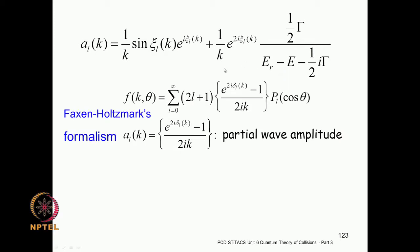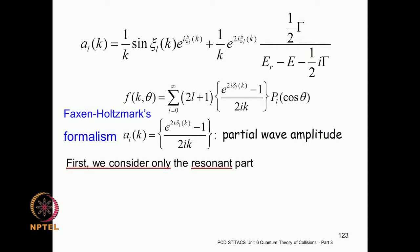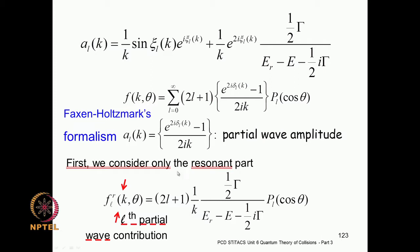We can put this into the Faxén-Holzmark equation for scattering to get the scattering amplitude, and then get the scattering cross section, which gives us the Breit-Wigner formula. For the time being, let us focus only on the resonance part — we will pretend the non-resonance background part is not important, or is zero — to obtain the pure Breit-Wigner formula.